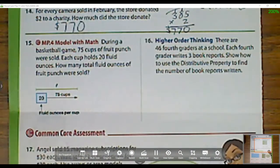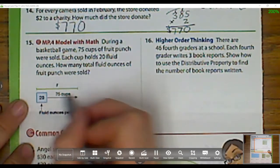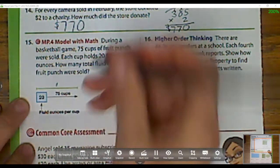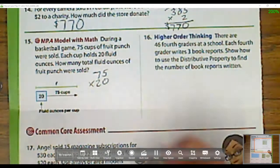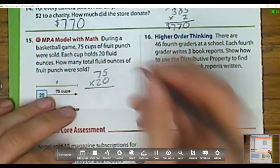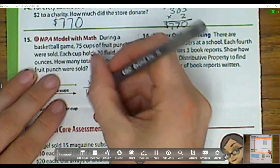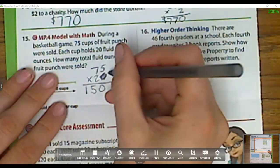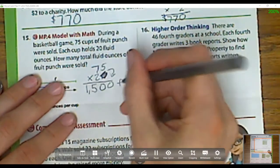Now let's head to number 15. During a basketball game, 75 cups of fruit punch were sold. Each cup holds 20 fluid ounces. How many total fluid ounces of fruit punch were sold? What I have is I have 75 of these models, but each one is 20 groups. So that's 75 times 20. If I remember from before, I have several strategies I can do. I'm going to do one that we haven't talked about that much. I'm going to ignore this zero and just do 2 times 75. I know my quarters, 75 plus 75 is 150. And then like we talked about yesterday, I can add the zero back on. So how much was it? It was 1,500 fluid ounces.